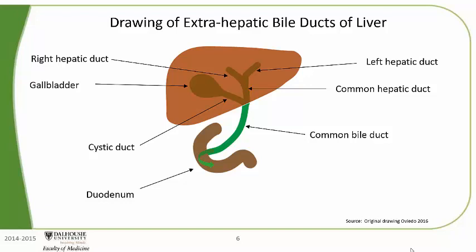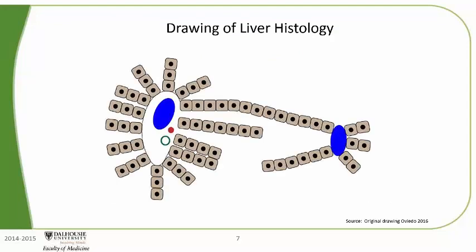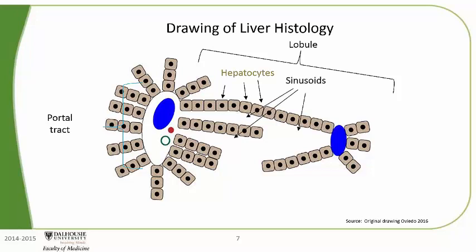Now let's review a drawing of the histology of the liver. The liver is extremely complex, and this is a very simplified drawing so that we can begin to learn the names of the structures. This drawing corresponds to microscopic structures in the liver. Here on the left is the portal tract. This area here is referred to as the lobule — it contains hepatocytes and sinusoids. The beige boxes with round circles in the middle are the hepatocytes, which are the main type of cells in the liver. And this over here is the central vein.